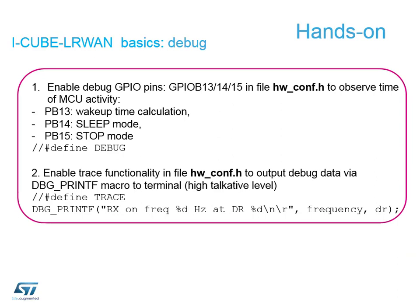Some other basic debug features: we have some extra pins we can monitor to show what's going on inside the application. PB13, PB14, and PB15 can be monitored to see wake-up time calculations, which mode you're in, whether you're in sleep mode or stop mode. There are also some extra debug hash defines that you can remove to add extra debug features, like the debug printf where you can get more information out of the system - all integrated inside the software stack in the I-CUBE-LR1 package.